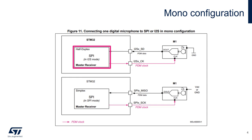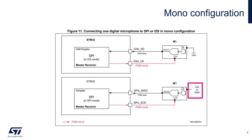If the I2S protocol is used, it is recommended to set the left-right pin of the microphone to ground, since by default the I2S protocol samples the incoming data using the rising edge of the clock. If the SPI protocol is used, the left-right pin of the microphone can be connected either to VDD or to ground. The SPI clock polarity configuration shall be aligned with the configuration of the left-right pin.